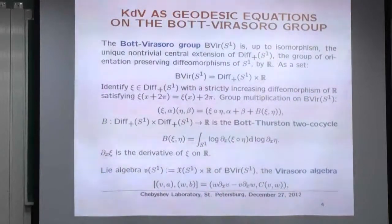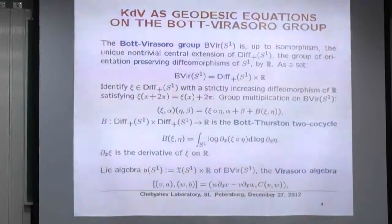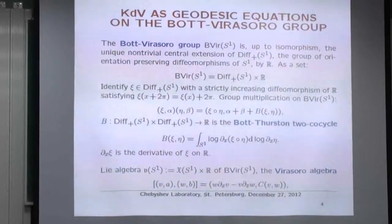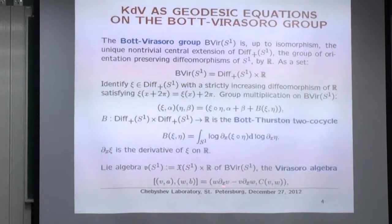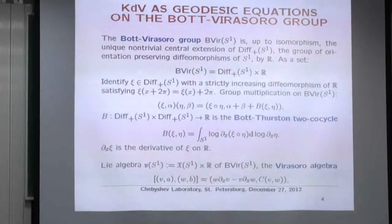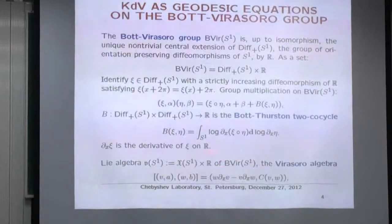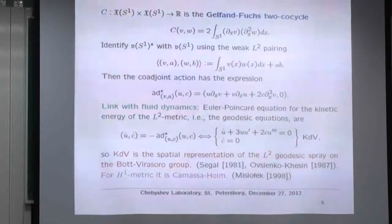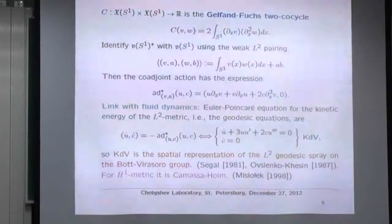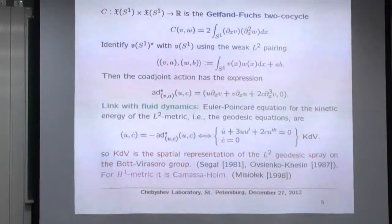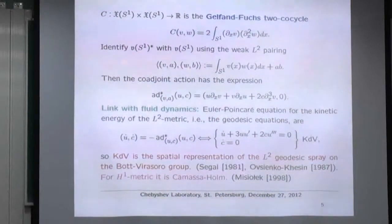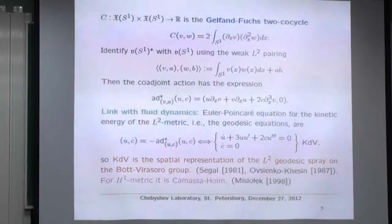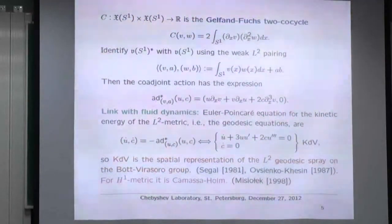This has a Lie algebra called the Virasoro algebra, which as a vector space consists of vector fields on the circle times ℝ. The bracket includes a minus sign in front of the Lie bracket for reasons related to right versus left. It has a cocycle — the Gelfand-Fuchs cocycle. Historically, it was Bott and Thurston who integrated the Gelfand-Fuchs cocycle to get the group cocycle. I identify the dual with itself using the weak L² product.